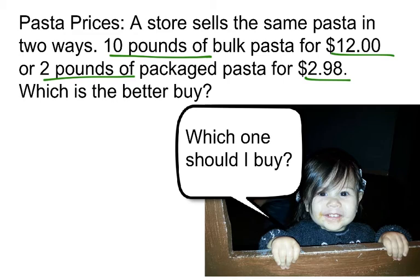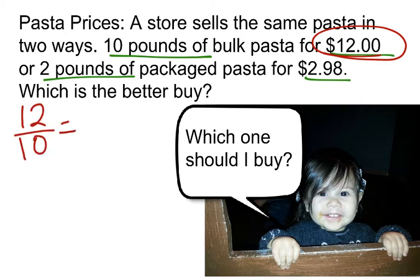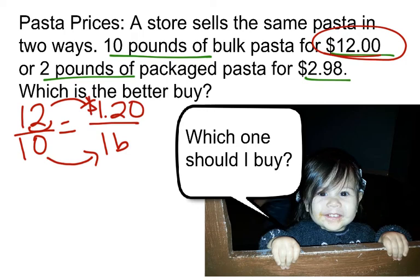Common mistakes here fall one of two ways. Sometimes students see $2.98 is cheaper so that must be the better buy. Another common mistake is assuming that buying in bulk always means a better deal. To find out which is actually cheaper, we need to find the cost per pound. We know $12 gives me 10 pounds. How do I get from 10 to 1? I divide by 10. Dividing 12 by 10 gives $1.20 per pound.